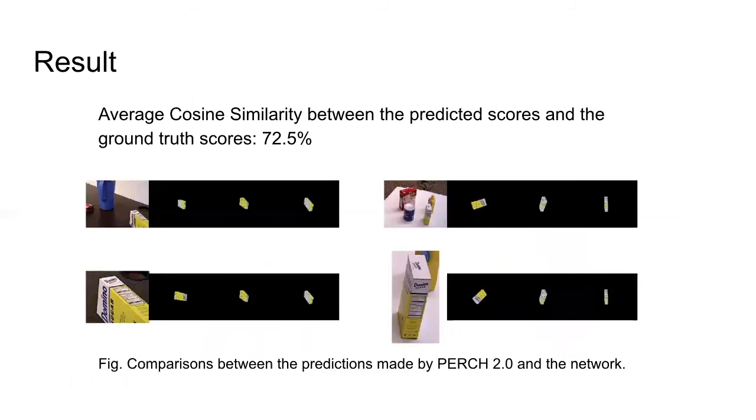The figure shows the comparison between the predictions made by PERCH 2.0 and the network. The top row shows input images and the top three most likely poses predicted by PERCH 2.0. Bottom row shows the top three most likely poses predicted by the DenseFusion network. We calculate the cosine similarity between the predicted scores and the ground truth scores and get the average similarity around 73%.